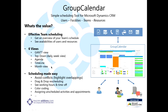We have several different views for this: the Gantt, top-down, and agenda. Any way that you want to look at this data, you can customize your calendar to see it. Each individual view gives different options such as drag and drop. Scheduling is really made easy — it allows you to avoid conflicts by highlighting overlapping meetings or activities. Drag and drop rescheduling, you can see work hours and people's time off right from the calendar. Color coding is really important — it helps you see everything at a glance. You can also do assigning of unscheduled activities and appointments.